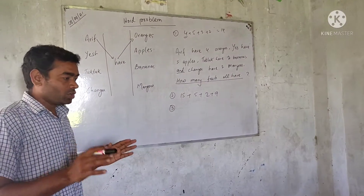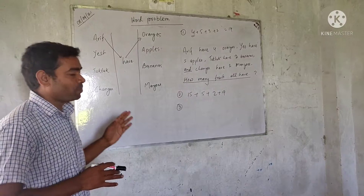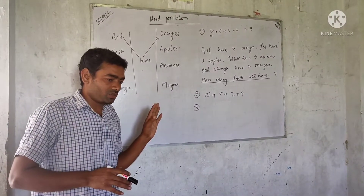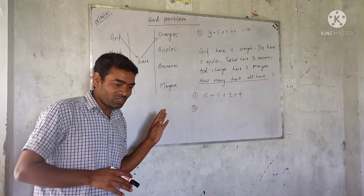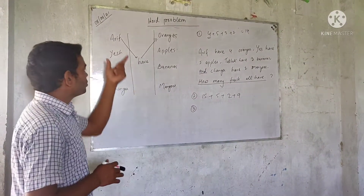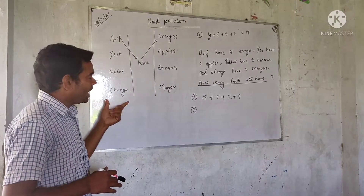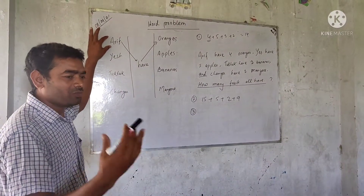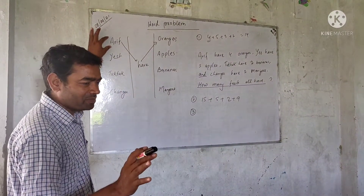What you have to do? You have to make three columns.